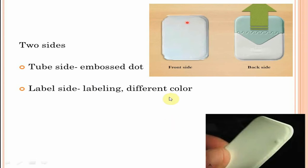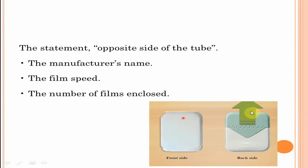Next is the back side. It has a flap used to open the film packet to remove the film prior to processing. This is also called label side because it has labelings such as the manufacturer's name, film speed, number of films enclosed, and a labeling indicating opposite side towards the tube. This labeling helps identify the front and back sides.